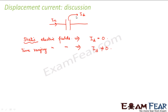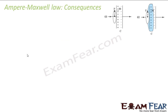If you use the modified Ampere-Maxwell law to calculate the magnetic field at the same point of the capacitor but considering different Amperian loops, you will get the same consistent result.